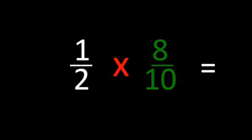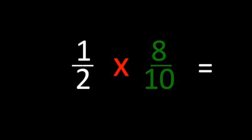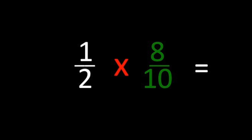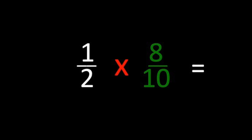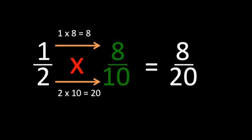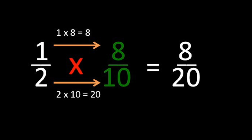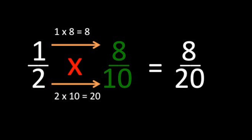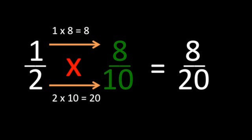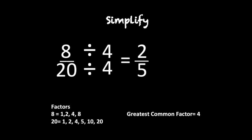Then flip the sign — it seems pretty typical, but after the flip you will have the reciprocal. Now our problem is looking so much greater — multiply the numerators and denominators. Final step, you gotta simplify: find the greatest common factor of both numbers, then divide.